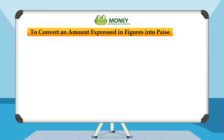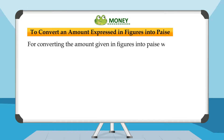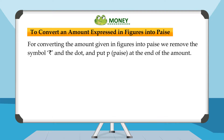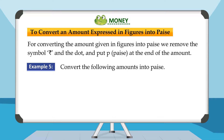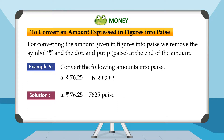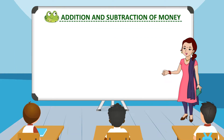To convert an amount expressed in figures into paise: remove the rupee symbol and the dot, and put 'p' at the end of the amount. Example 5: Convert the following amounts into paise. A. Rupees 76 and 25 paise is equal to 7625 paise. B. Rupees 82 and 83 paise is equal to 8283 paise.